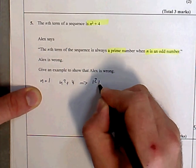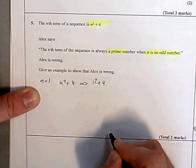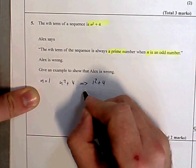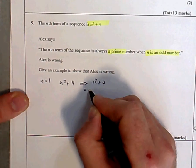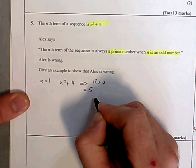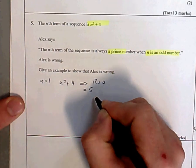So that's going to be 1 squared plus 4, which is 1 plus 4 equals 5. That's a prime number, so I've not done anything yet except confirm this thing.